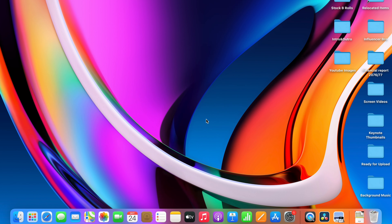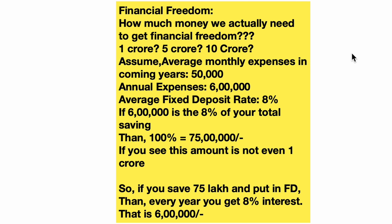So let's begin. Financial freedom is a very good idea around money. How much is it? 1 crore, 5 crore, 10 crore? Well, assume that the average monthly expenses are around 5,000. That's just a simple life. The amount of money needed to cover 5,000 in expenses works out to around 6,000,000.